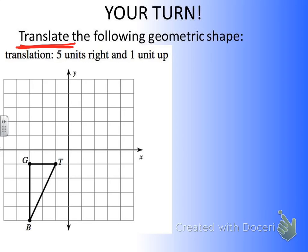And then it says translation five units right and one unit up. So what you do is go point by point. There's point G, point T, and point B on the graph, and you just literally follow the instructions: five units right, one unit up.